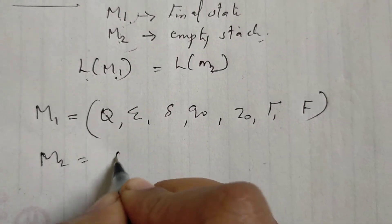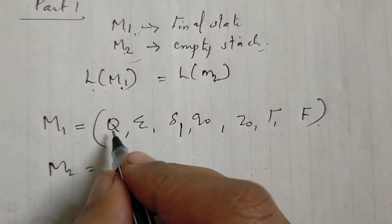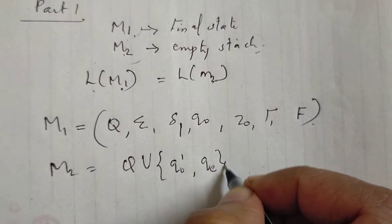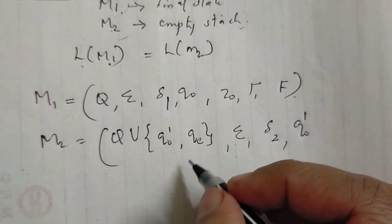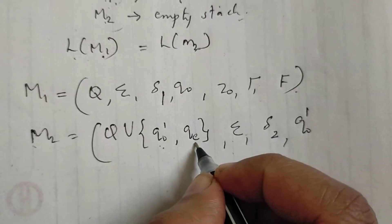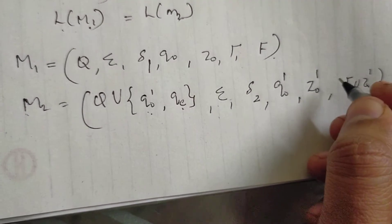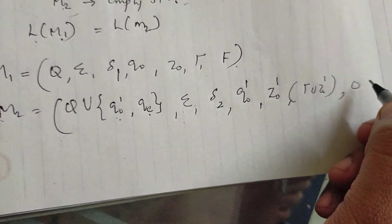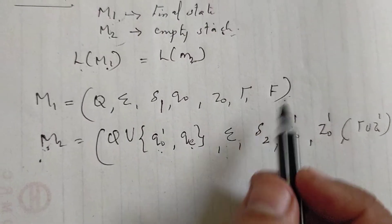We will now prove that any language accepted by M1 can also be accepted by PDA M2. M2 is constructed from M1. We will define M1 and M2, and add a new additional state qe to M2.